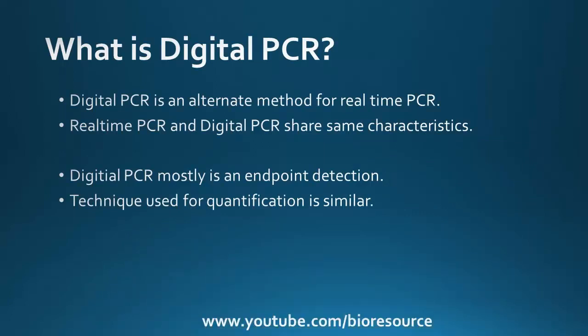Digital PCR is an alternate method for real-time PCR. It is similar to real-time PCR with certain differences in the way the sample is quantified. Digital PCR is mostly an endpoint detection method, whereas in real-time PCR the sample is detected in real-time, so you can see the amplification plot as the amplification occurs.